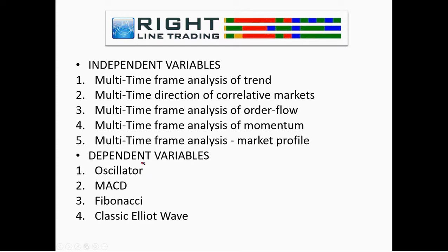Dependent variables are indicators or systems moved by the independent variables. If you use a dependent variable in your trading, it's only going to degrade the precision of your trading. Oscillators only make your trading worse — they don't predict the future direction of price, they only tell you where price has been. The same is true for MACD and Fibonacci. We've looked at Fibonacci analysis on two years of market replay data and it simply does not work.